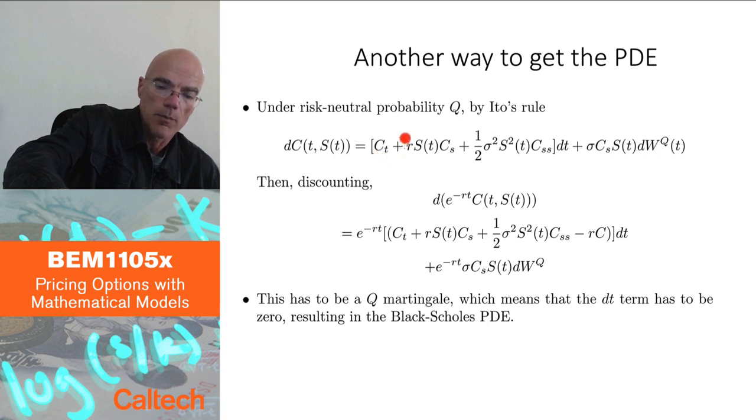First derivative with respect to time plus first derivative with respect to stock times the drift, which is now rs under Q, plus second derivative with respect to stock times one half sigma squared s squared, volatility times s squared. And then this is the same as before, first derivative times sigma s, dw_Q in this case. So this is Ito.